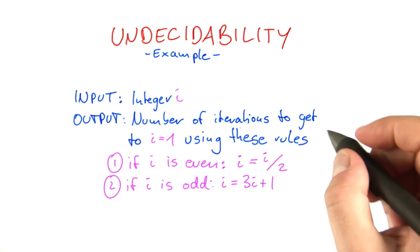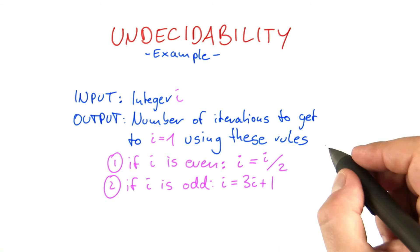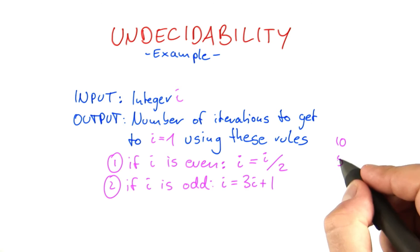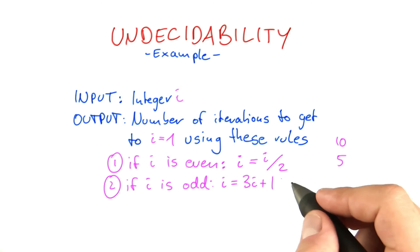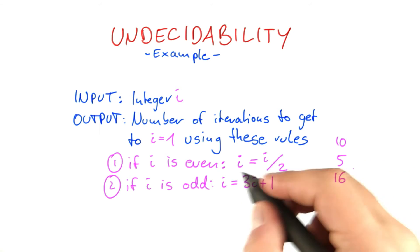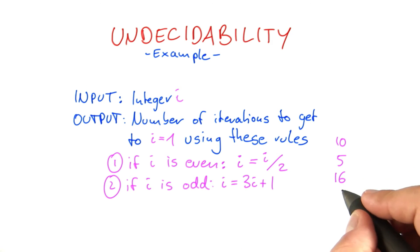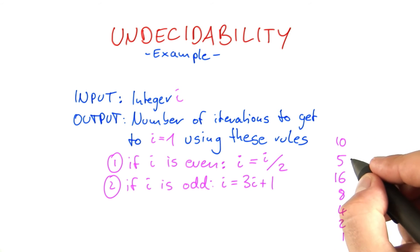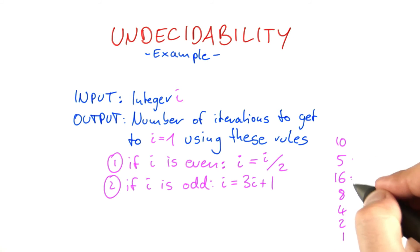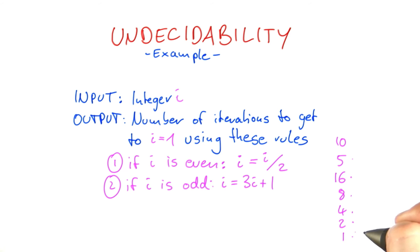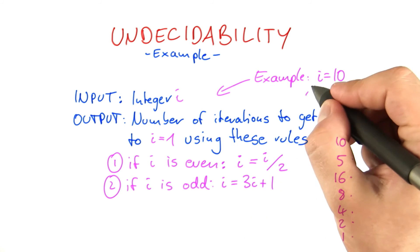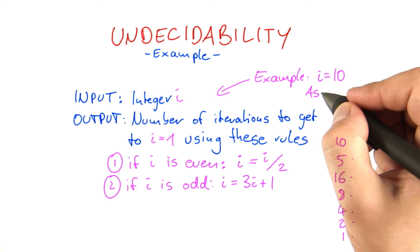For example, when we start out with i being 10, we first apply the first rule and get down to 5. 5 is odd, so the new value is 16. Then we divide by 2, divide by 2, divide by 2, divide by 2. So we have 1, 2, 3, 4, 5, 6 iterations. So i equals 10, the answer is 6.